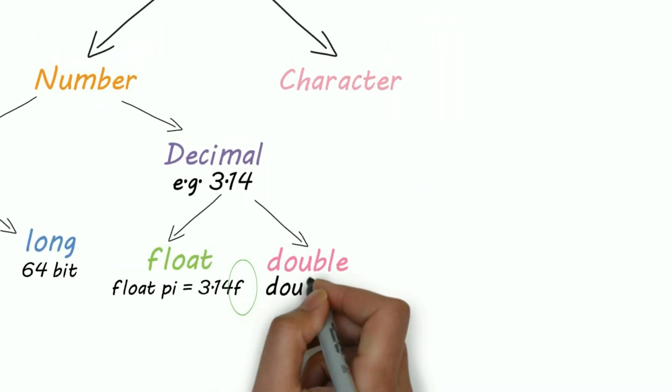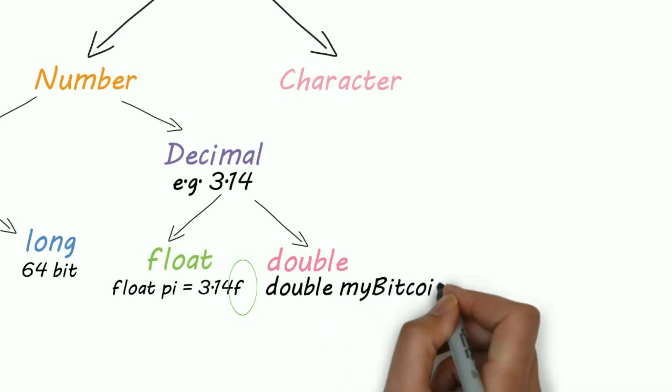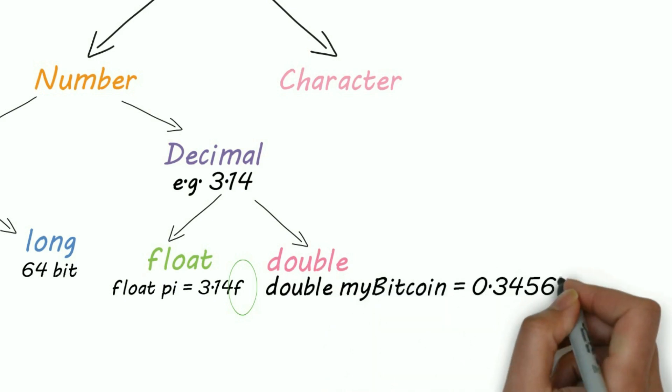But if I want better precision, for example, value of a bitcoin, my bitcoin, then I'll use double. For example, double my bitcoin is equal to some value.